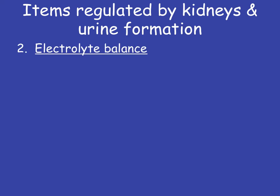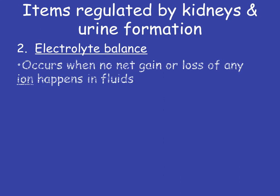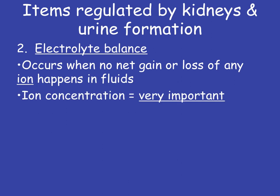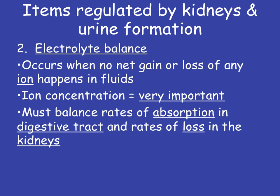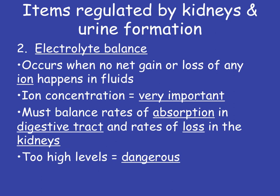The second thing regulated by the kidneys is your electrolyte balance. This occurs when you get no net gain or loss of any ion in your fluids. You want to make sure that you have the proper amount of calcium and sodium for things like nerve firing and muscle contractions — that's what electrolyte balance is all about. The kidneys have to monitor the rates of absorption in the digestive tract and the rates of loss in the kidneys. If I eat a lot of foods that cause my digestive tract to absorb a lot of calcium, my kidneys have to get rid of some of that if we can't store it, because we need to maintain that balance. Too high levels of some of these, like sodium and potassium, is very dangerous.